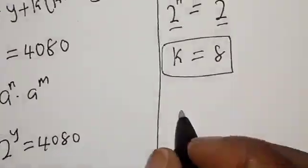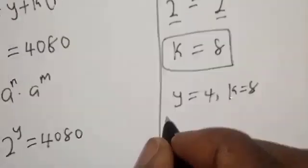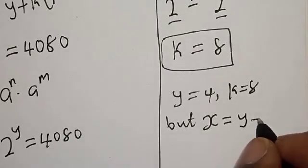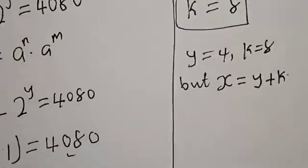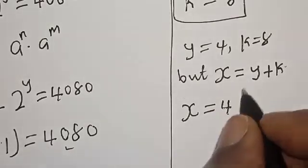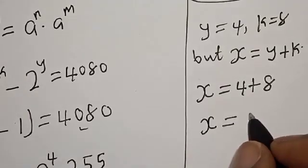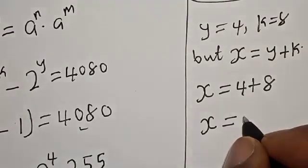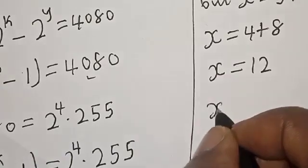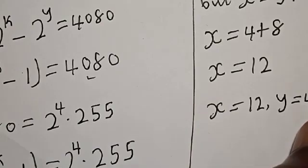Now we have the value of y equal to 4 and k equal to 8. Since x is equal to y plus k, x is equal to 4 plus 8, so x is equal to 12. Therefore, our final answer is x equals 12 and y equals 4.